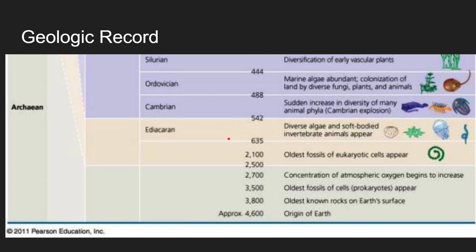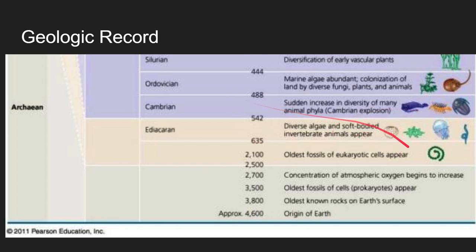Fast-forwarding about 2 billion years to 635 million years ago in the Ediacaran period, we see diverse algae — precursors to plants, like seaweed. We also start seeing soft-bodied invertebrate animals appear. The first animals that aren't amoebas start appearing — things like jellyfish and corals just kind of floating around. There are no eyeballs, no real hunting methods. Most were predators of plant cells.